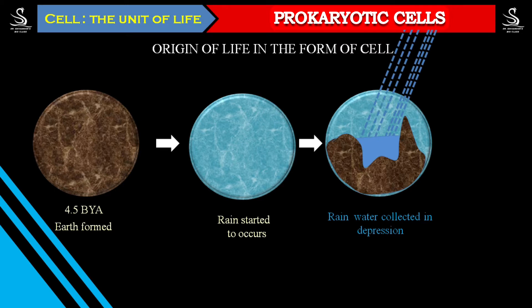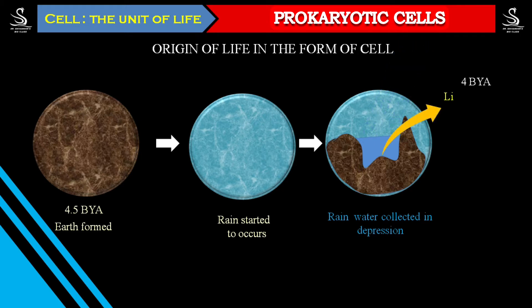Whenever the rain began on the earth, that rainwater started to collect in a depressed area. As the rainwater ran on the surface towards the depressed area, it started to collect different types of chemicals. Those chemicals started to collect in this water.